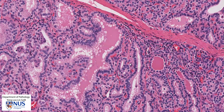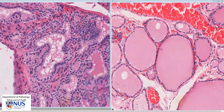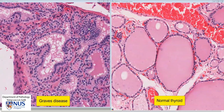Let's take a second to compare this with a thyroid without Graves' disease. Here is a side-by-side comparison. On the left, we have the case of Graves' disease. And on the right, we have a normal thyroid.